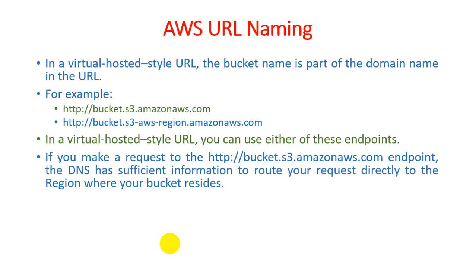If you use the virtual-hosted-style URL, you just use your bucket name dot s3 dot amazonaws.com, and they can directly redirect your request to your nearest region, so you get a faster response.